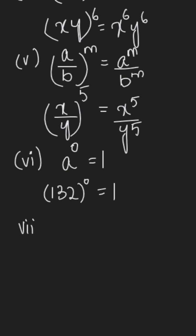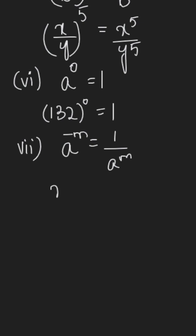Then you have the next rule which is the negative exponent which says a power negative m equals 1 over a power m. Something like x power negative 5 can be written as 1 over x power 5.